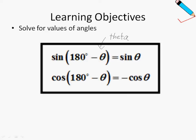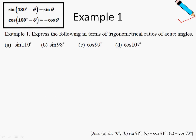So how exactly are we going to use this? We'll look at a few examples. Example number one: express the following in terms of trig ratios of acute angles. Recall that acute angles are angles less than 90 degrees.